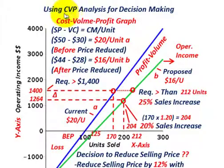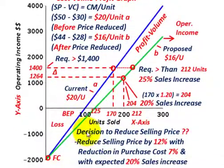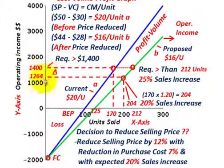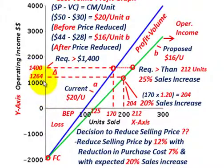We're going to be going over cost volume profit analysis here in some decision making. This is a problem where we're going to have to make the decision on reducing the selling price of a certain product we're marketing. Currently we're selling a certain number of units and generating a certain operating income. If we reduce the selling price, we can increase units sold and thereby increase our operating income.